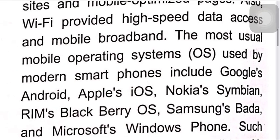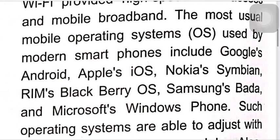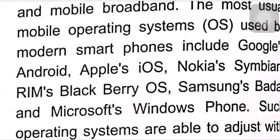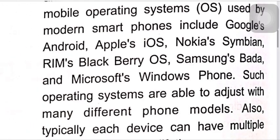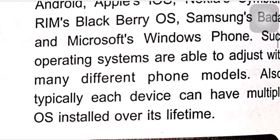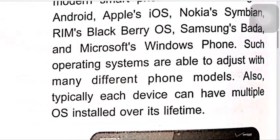The most common mobile operating systems used by modern smartphones include Google's Android, Apple's iOS, Nokia's Symbian, RIM's BlackBerry OS, Samsung's Bada, and Microsoft's Windows Phone. These operating systems function to perform many tasks, and are able to adjust to many different phone models. Typically each device can have multiple OS versions installed over its lifetime.